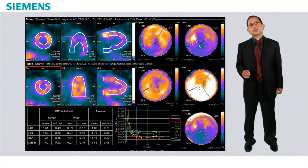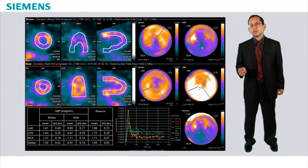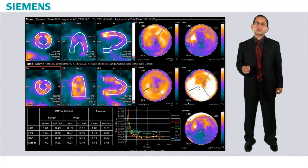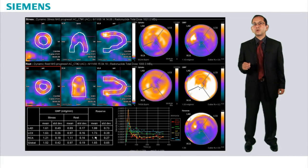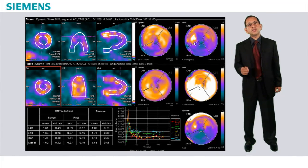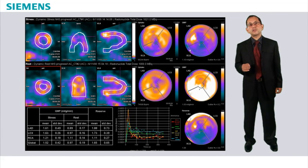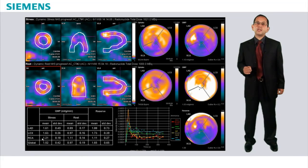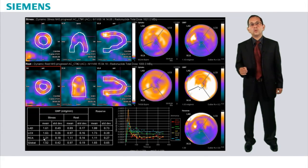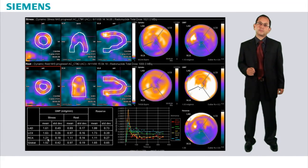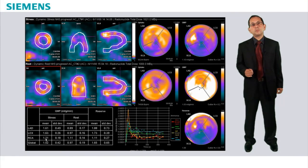In the stress flow polar plot we can click at any point to select a region of interest and look at the stress and rest flow values of that region, as well as the coronary flow reserve. We can also see the average flow of a particular arterial territory. For example, the right coronary artery territory shows pretty low mean flow of 1.21 ml per gram per minute. The lower limit of normal for peak stress flow is usually 2 ml per gram per minute, meaning there is significant ischemia in the right coronary artery territory.